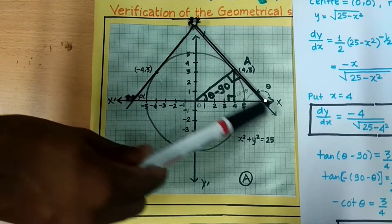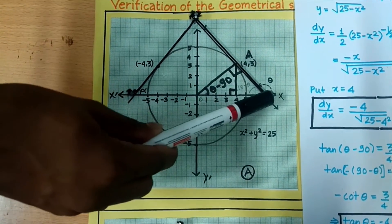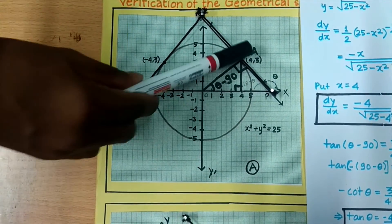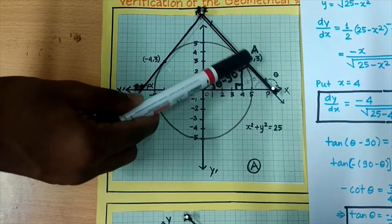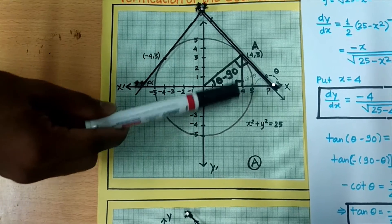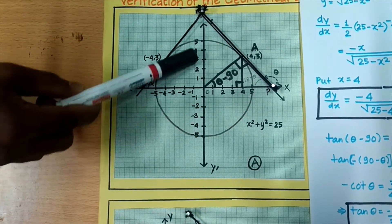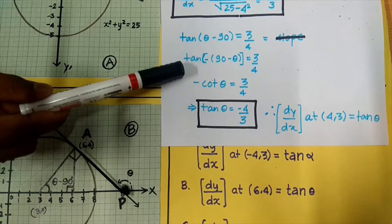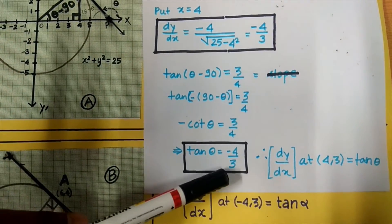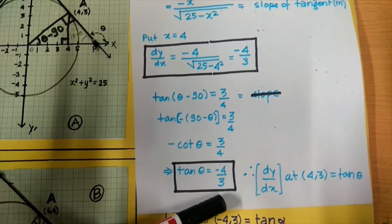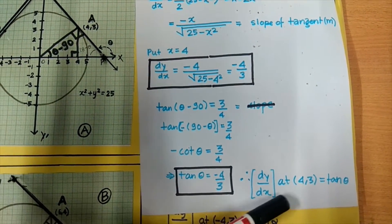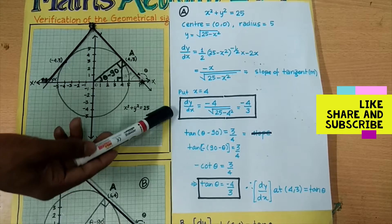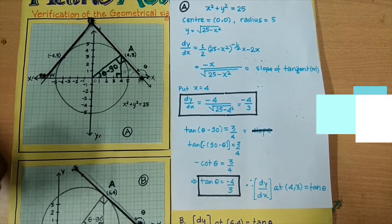The inclination of the line on the x-axis is θ. This angle will be 90°, so by the exterior angle property, angle AOx will equal θ − 90°. We draw a perpendicular from A to the x-axis. For θ − 90°, the perpendicular is 3 and the base is 4, so tan(θ − 90°) = 3/4, which simplifies to tan θ = −4/3. So we can verify that dy/dx at (4,3) equals tan θ. Both results are equal — the first from the derivative and the second from the inclination of the line.